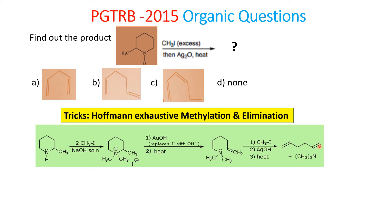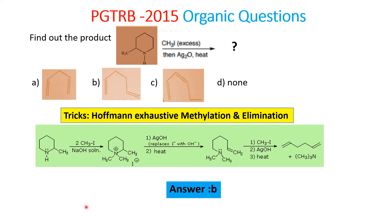Check the number of carbon atoms and accordingly select the product. Both options have double bonds on both sides, but check the number of carbon atoms. With the help of this structure we can easily predict the product — one option has one methyl group less. The number of carbon atoms is the same here. If the option is like this, check: two, four, six — so six carbon atoms will be there. Always check the number of carbon atoms and select the answer. The answer is B.